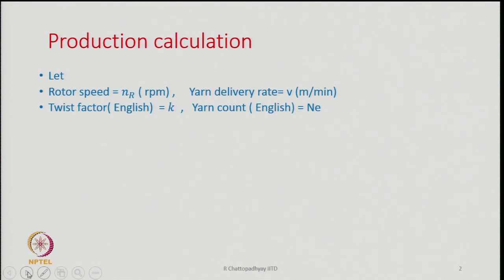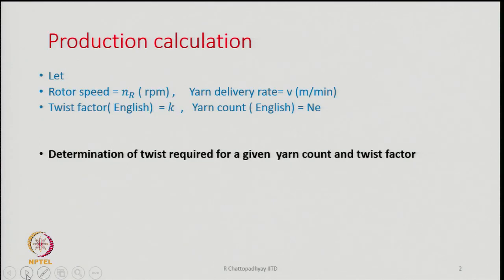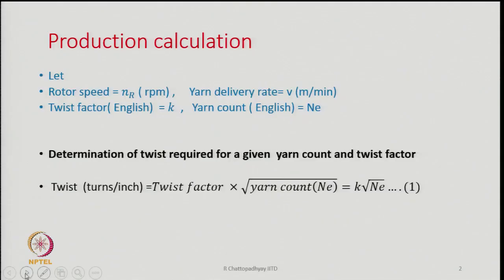We need to calculate the production that a particular rotor unit is generating per unit time — it could be per hour or per shift. First, determination of twist required for a given yarn count and twist factor. If the count and twist factor are given, we need to calculate how much twist to impart. Twist in terms of turns per inch is twist factor K multiplied by root over yarn count N_E.